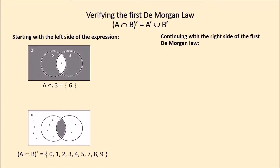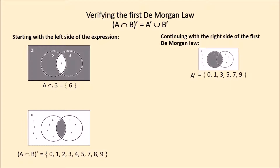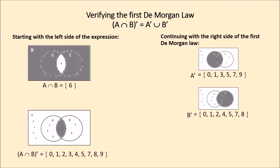Continuing with the right side of the expression — the De Morgan law. Complement of subset A: the Venn diagram shows the numbers that are not in subset A. The numbers that can be read are 0, 1, 3, 5, 7, 9. Complement of subset B: the Venn diagram shows the numbers that are not in subset B. The numbers that can be read are 0, 1, 2, 4, 5, 7, 8.